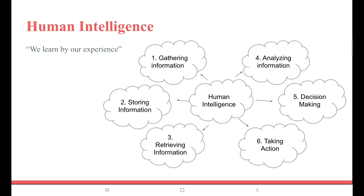The person will analyze that particular information — recalling that at that time, when I placed my finger near the candle, my finger got burnt. Then the person will decide: yes, I shall go towards it, or I shall not go towards it, and take action accordingly. So these are the six steps: gather information, store inside the mind, retrieve the information, analyze it, make a decision, and take action.